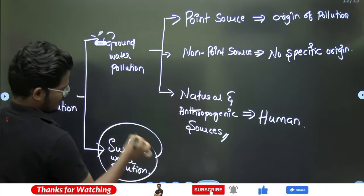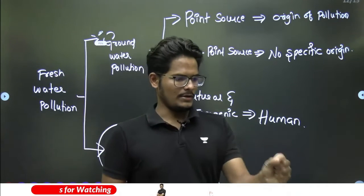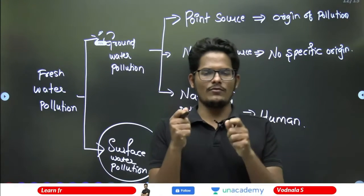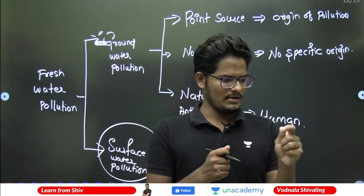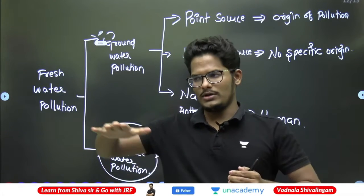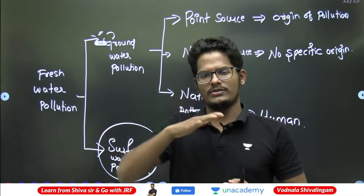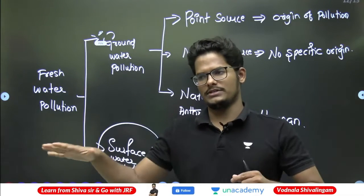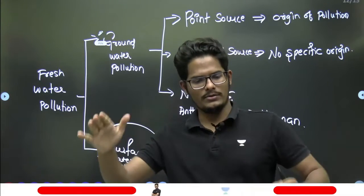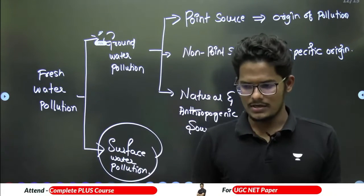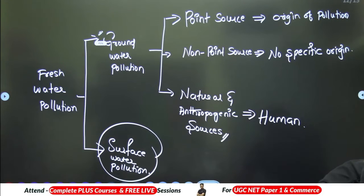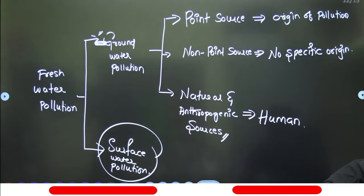Surface water pollution is when pollutants enter into a stream, river, or a lake. Only the upper layer of the water gets polluted, and since it is flowing water, the pollutants will also eventually get out of it.